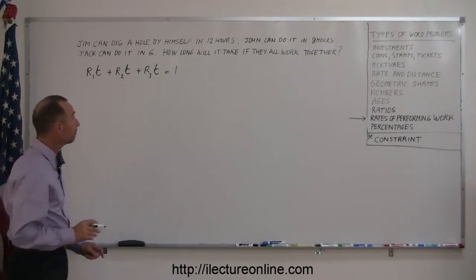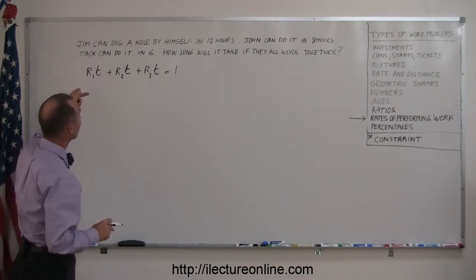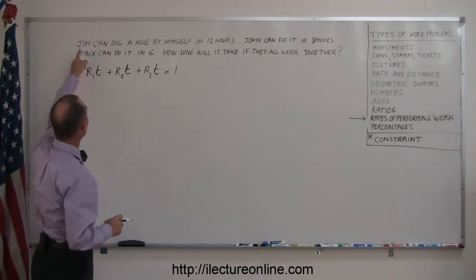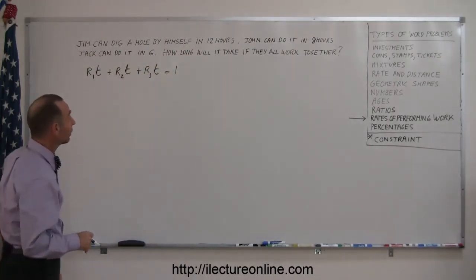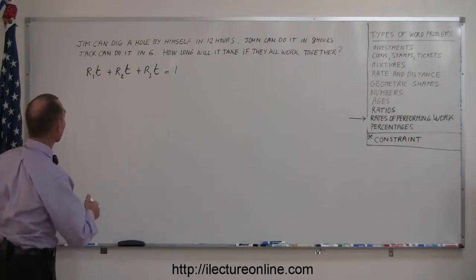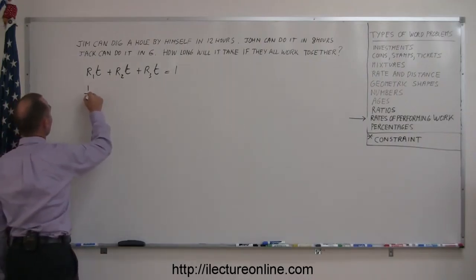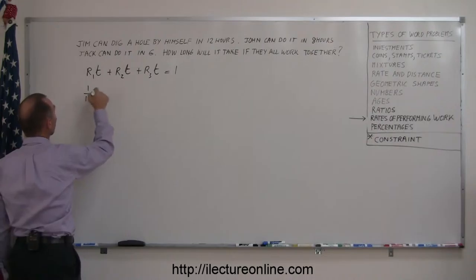Again the rate is the reciprocal of how long it takes to do the whole thing by yourself. So if Jim can dig a hole by himself in 12 hours, then the rate at which he does work is 1/12th of the whole job every hour.